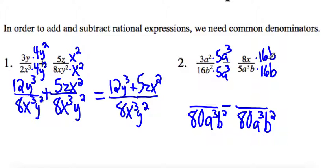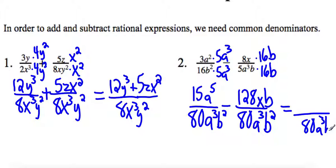So when we do this, this will give us a common denominator. Now on the numerator, on the first one, I have 15a to the 5th. And on the second one, 8 times 16, that's 128xb. I now have common denominators, so I can just leave that 80a cubed b squared.